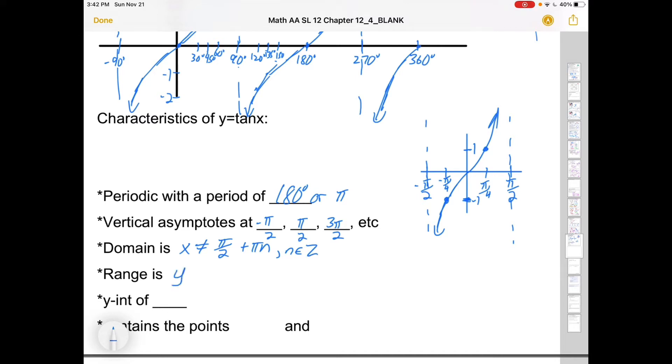The range is all real numbers. So we don't talk about amplitude when we talk about a tangent function because it goes up forever. It's got a y-intercept of 0. And it's got key points of negative π over 4, negative 1, and π over 4, 1.